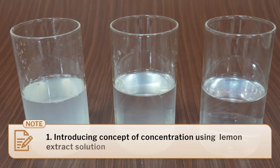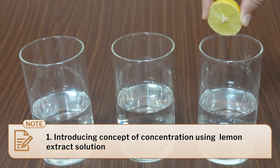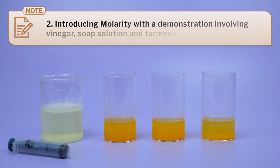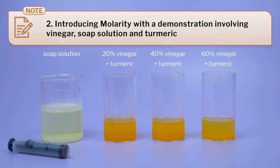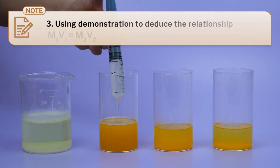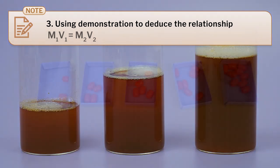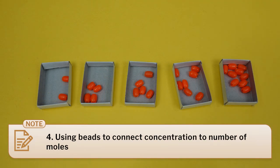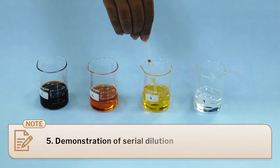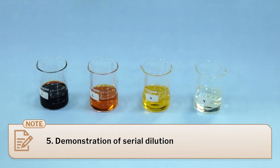In this video, we will talk about a few activities for the topic of concentration and molarity, taught to students of standards 8th and 9th — like introducing the concept of concentration using lemon extract solutions, introducing molarity with a demonstration involving vinegar, soap solution and turmeric, using this to deduce the relationship M1V1 = M2V2, using beads to connect concentration to the number of moles, and demonstrating serial dilution. Let's begin.